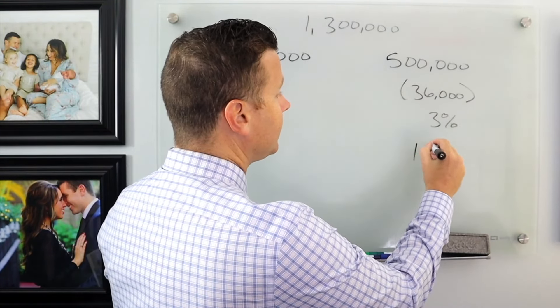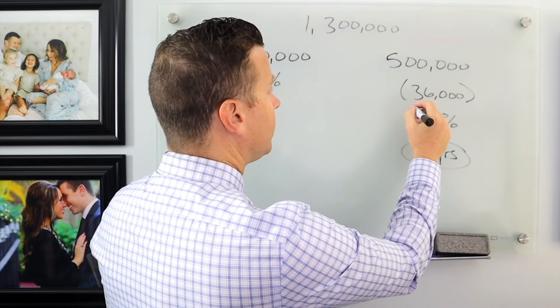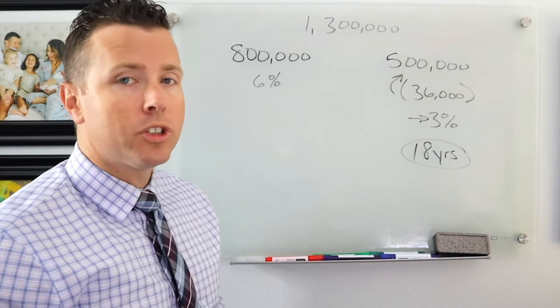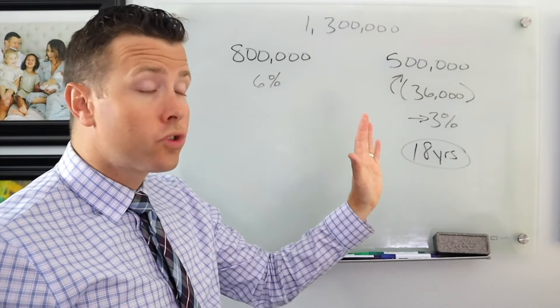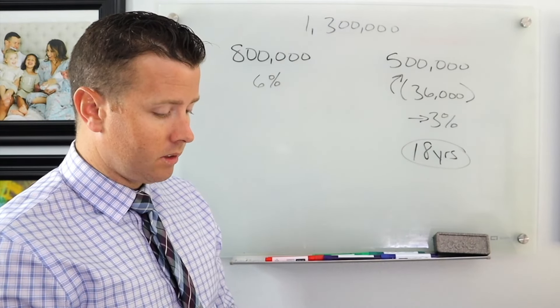So basically 18 years of income taking $36,000 off of $500,000 earning 3%, because what I want to do is I want to run this super duper conservative.